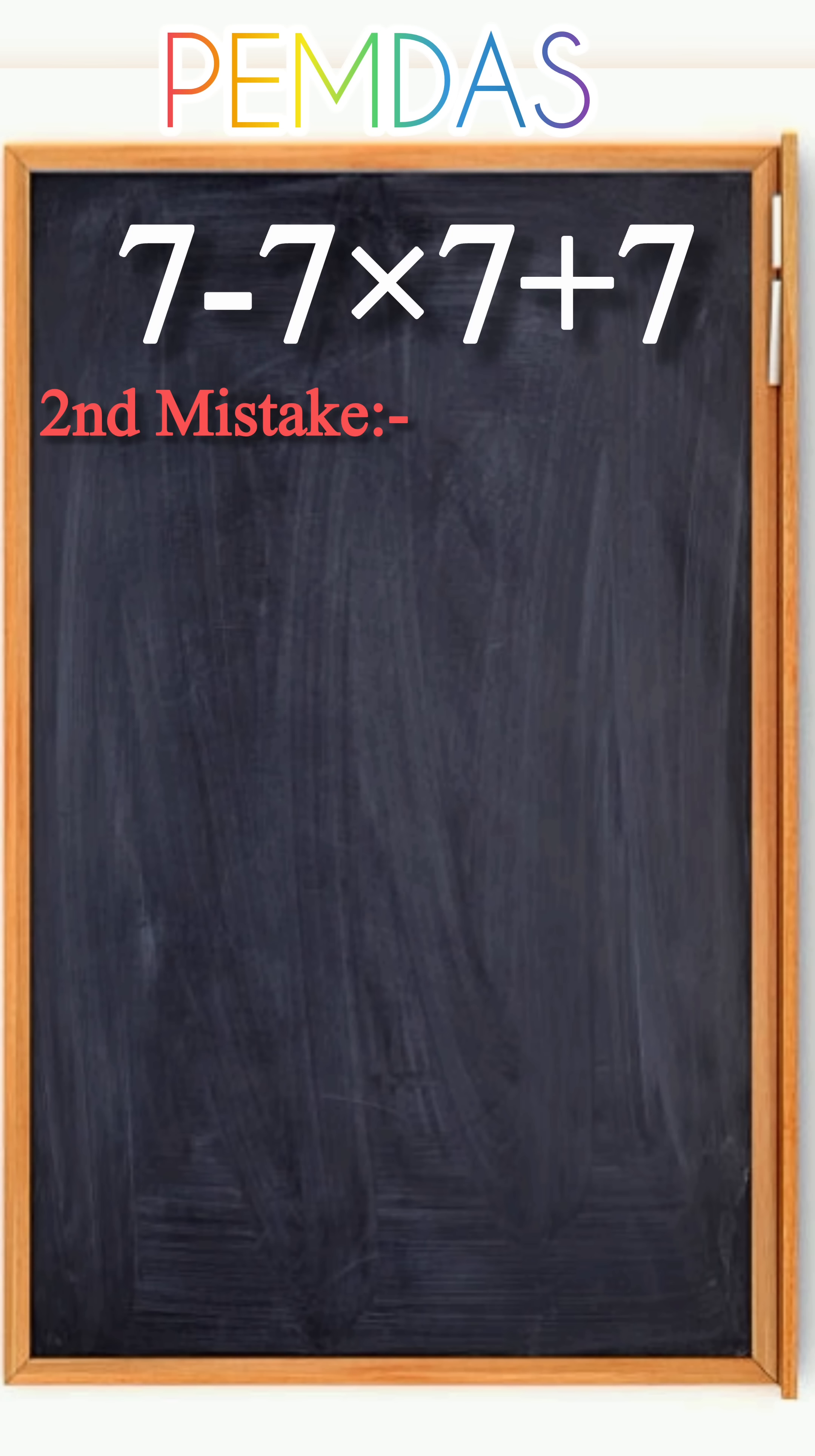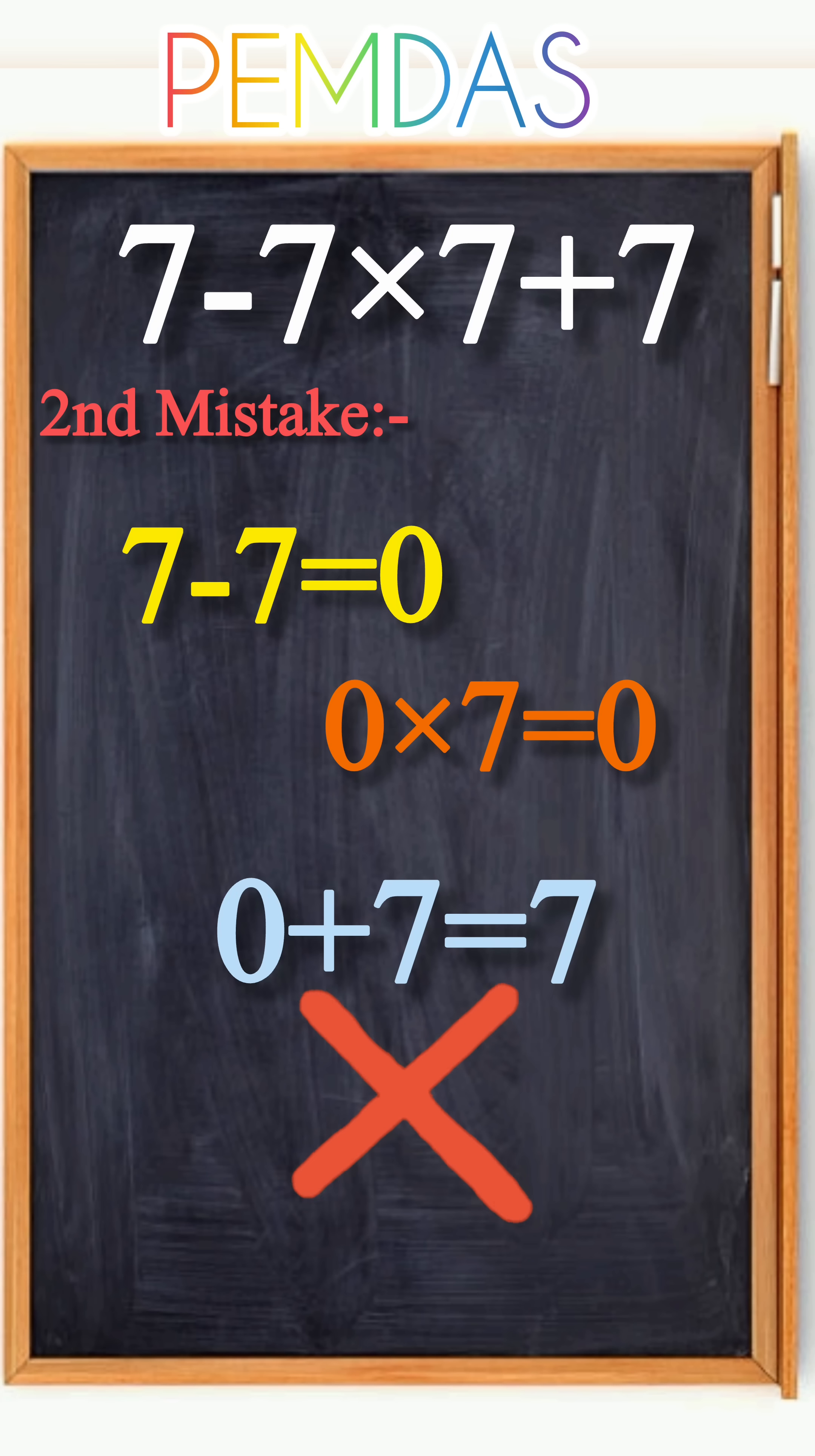Second mistake: others go straight from left to right. They do 7 minus 7 equals 0, then 0 multiply 7 equals 0, and finally 0 plus 7 equals 7. It looks logical, but math doesn't work that way.